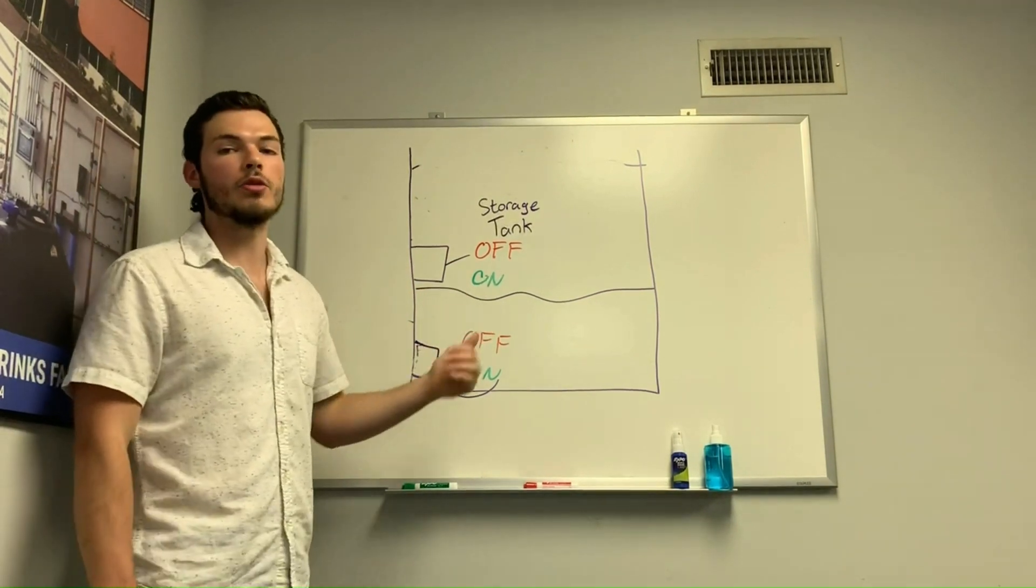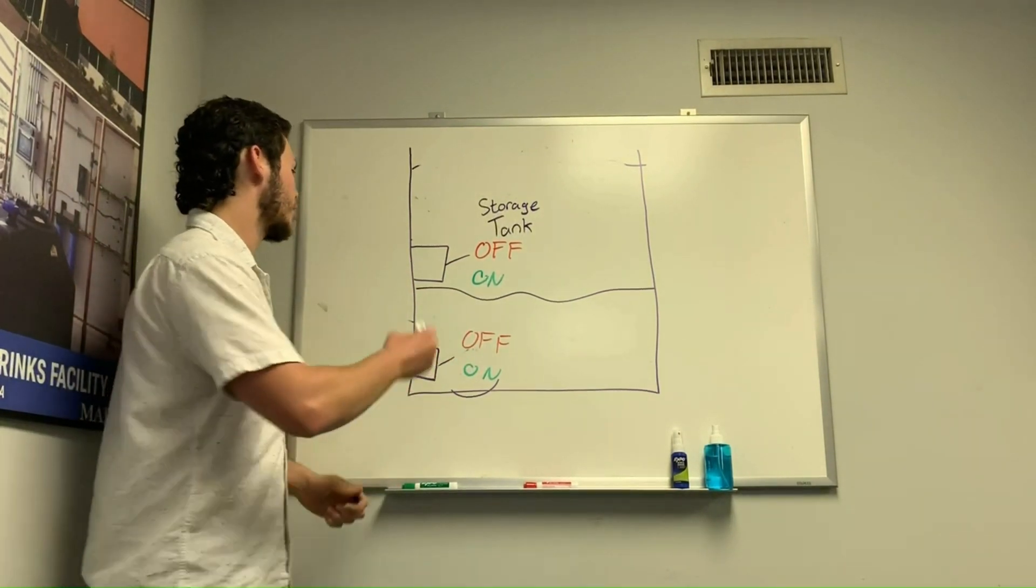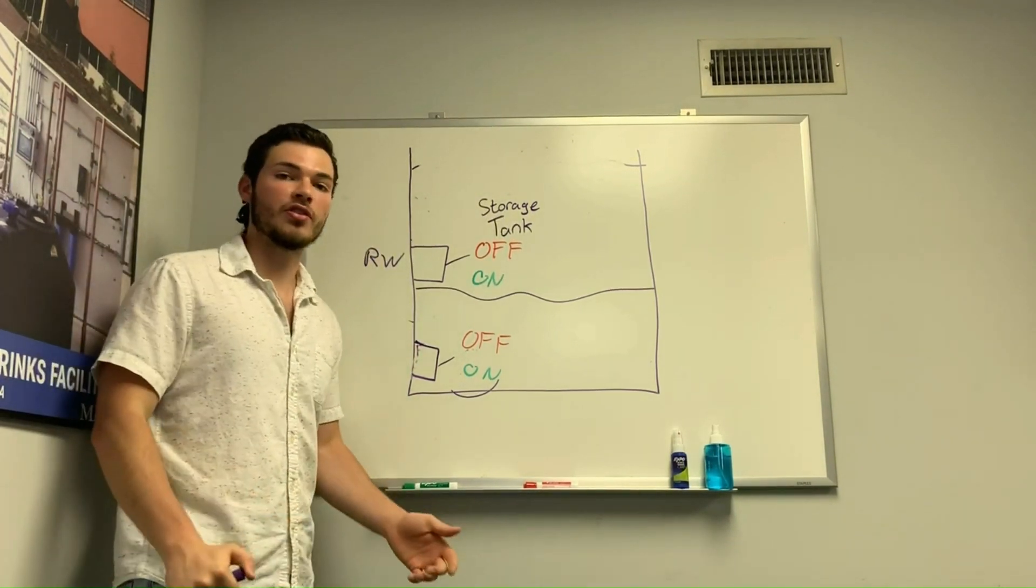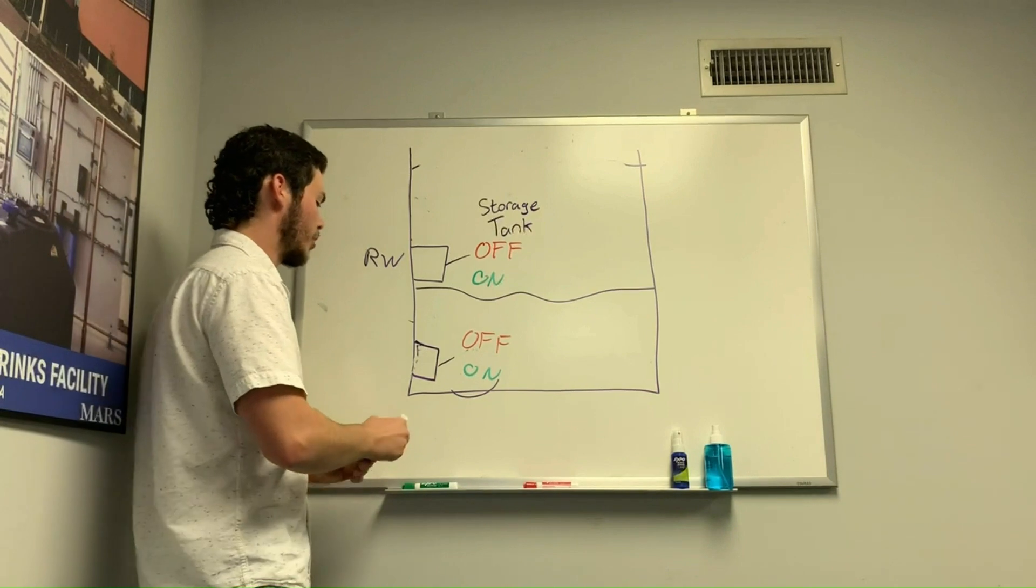So you'll have one for rainwater. And then if you don't have enough rainwater in your system right now, there'll be a second switch. When the water level falls below this one, it will turn this switch on.